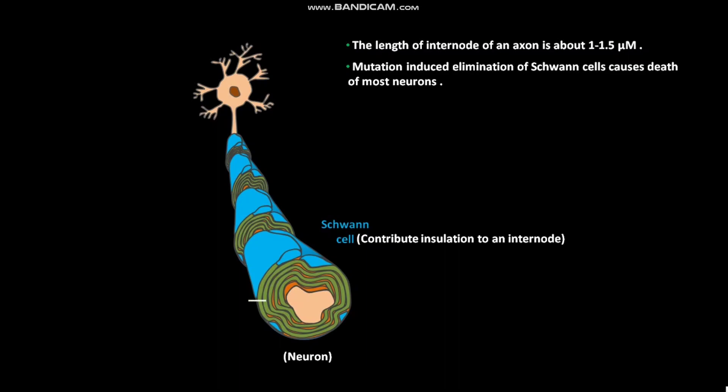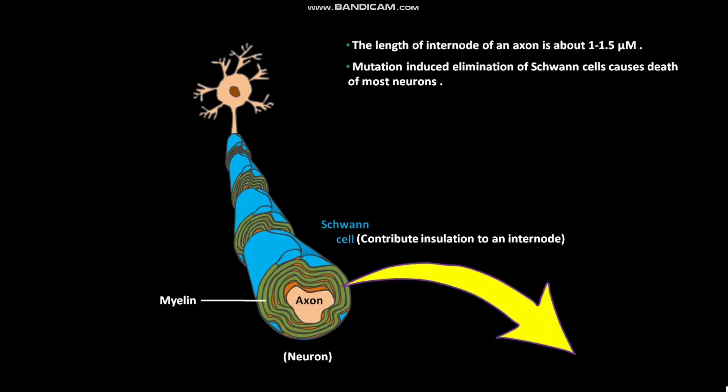Spiral myelin membrane is wrapped around the axon and is present as a series of layers or lamellae. Each lamella in the spiral myelin membrane is made up of a phospholipid bilayer. Now let us take a close-up view of three layers of the spiral myelin membrane.